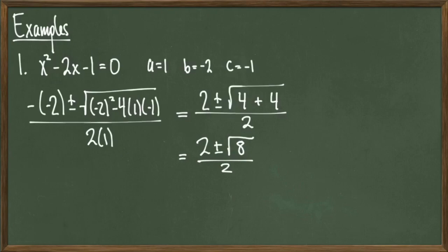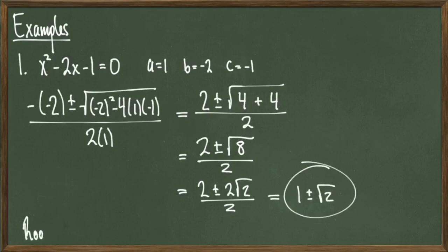And since 8 equals 2 squared times 2, we can rewrite the numerator as 2 plus minus 2 times the square root of 2. And then we notice that the 2's cancel out of the numerator and denominator, giving us a final answer of 1 plus minus the square root of 2. Therefore, the roots of this quadratic equation are 1 plus the square root of 2 and 1 minus the square root of 2.